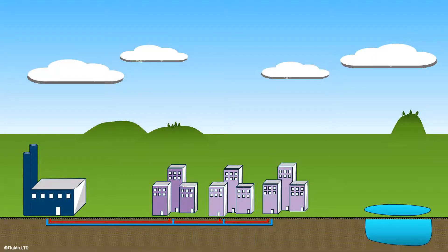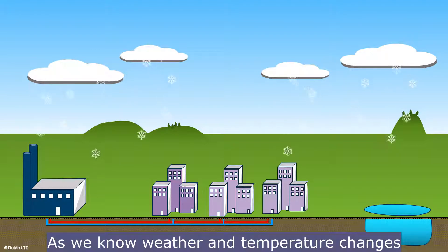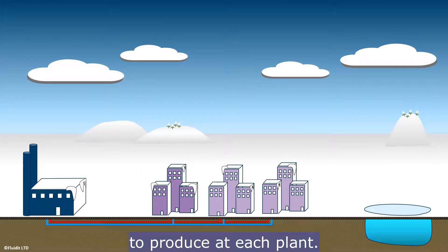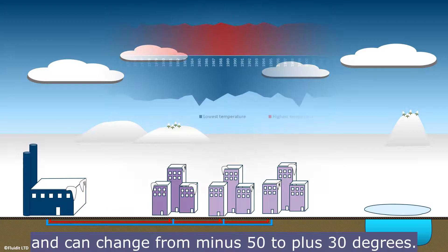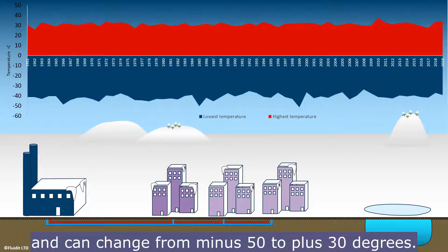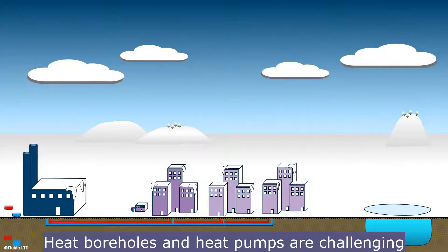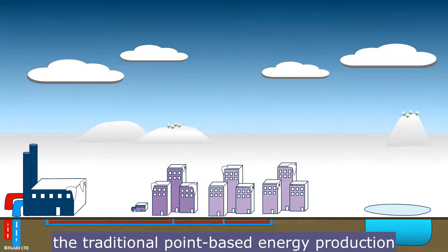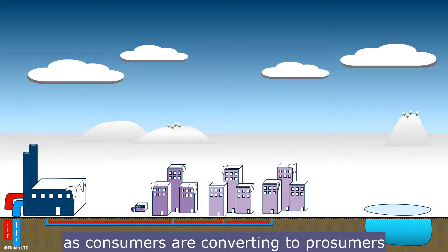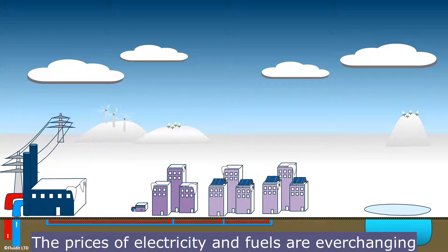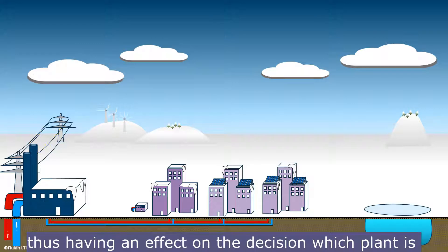Weather and temperature changes control the demand, and what's optimal to produce at each plant varies throughout the year — temperatures can change from minus 50 to plus 30 degrees Celsius. Heat boreholes and heat pumps are challenging traditional point-based energy production, as consumers are converting to prosumers and geothermal energy is being built on a large scale.